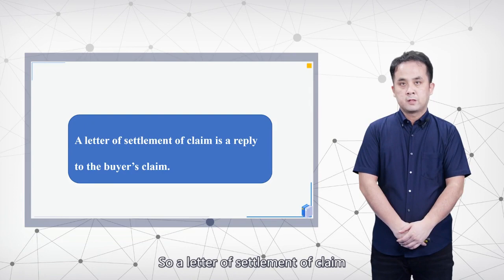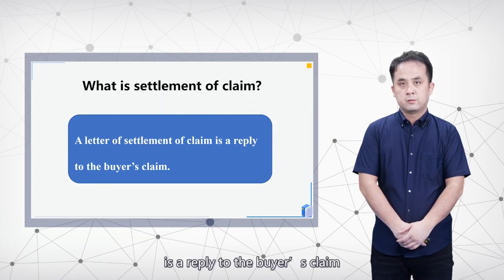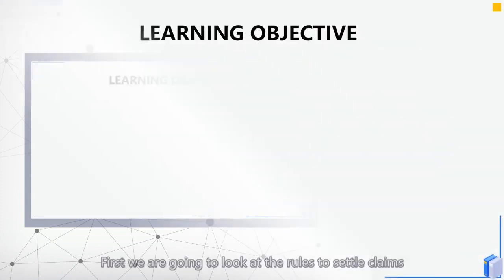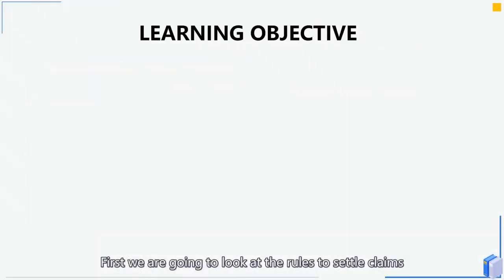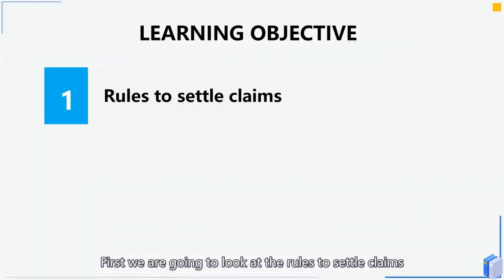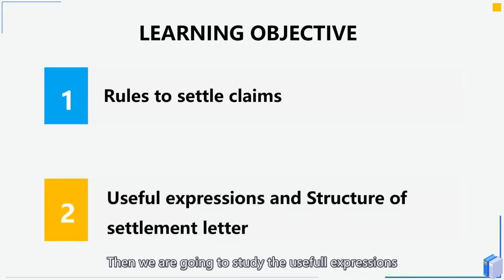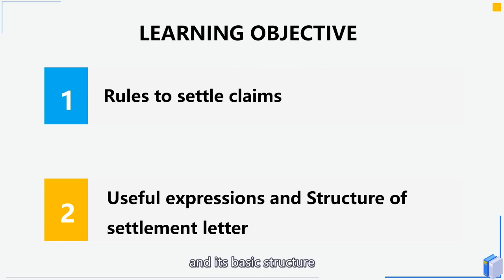A letter of settlement claim is a reply to the buyer's claim. Today's learning objectives are: first, we are going to look at the rules for settling a claim; then we will study the useful expressions for writing a settlement letter and its basic structure, which includes both accepting and rejecting.